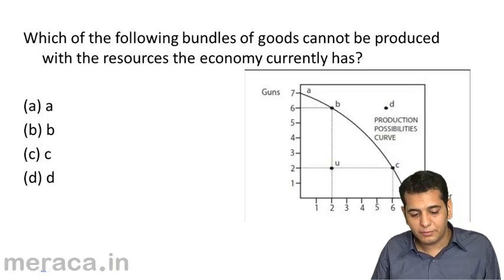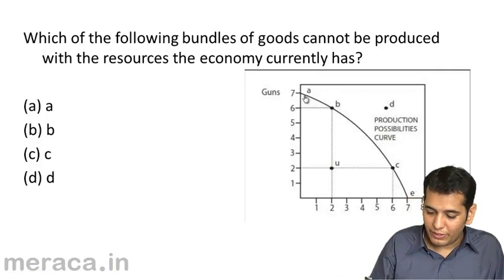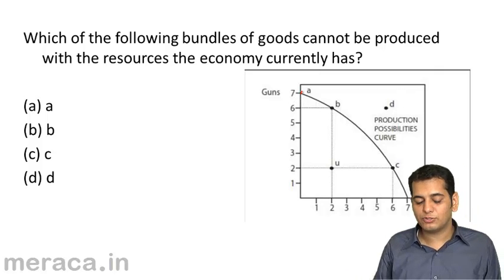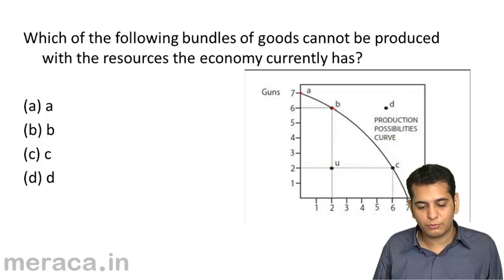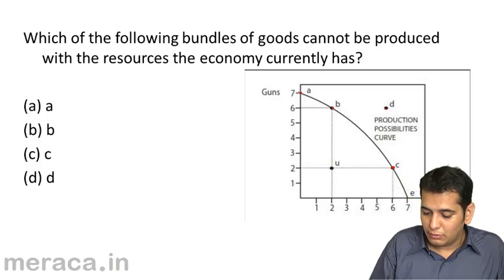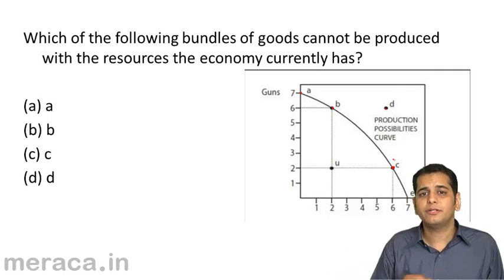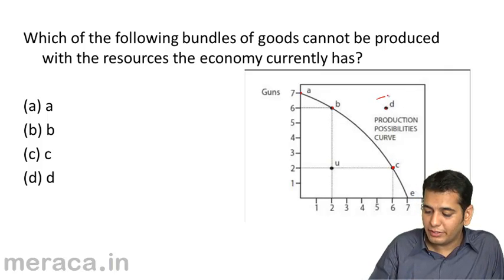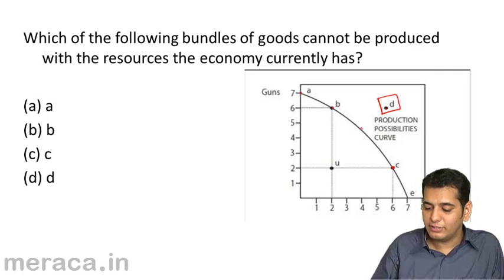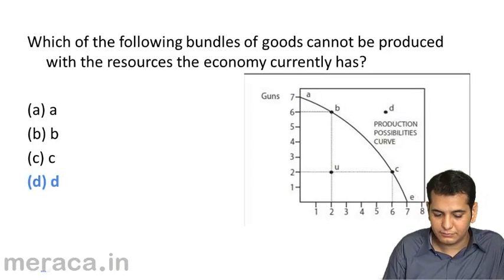Which of the following bundles of goods cannot be produced with the resources the economy currently has? Points A, B, C are on the production possibility curve, but point D is outside it. We can produce combinations A, B, and C, but we cannot produce the combination given by D because it is outside the production possibility curve. The answer is D.